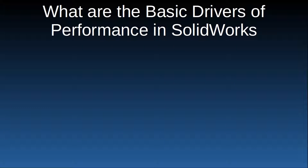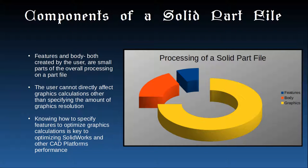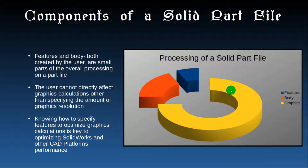The basic drivers of performance in SOLIDWORKS are these — the components of a SOLIDPART file. Just like an anatomy class, this is the anatomy of a file. Features make up a small part, the body makes up a bigger part, and the graphics make up a large majority. These proportions can change depending on the features of the part, but this is generally how it will look.